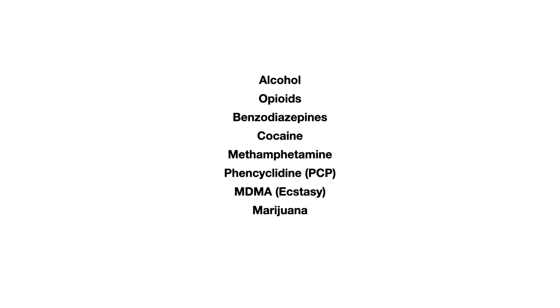Alcohol, opioids, benzos, cocaine, methamphetamine, PCP, MDMA, marijuana, and then LSD. In each of these substances we're going to be talking about what it looks like when somebody is intoxicated, what it looks like when somebody is experiencing withdrawal, and then we'll create some concept maps to help you associate these substances with other non-related comorbid medical conditions or complications that tend to occur as a result of utilization of one of these substances.